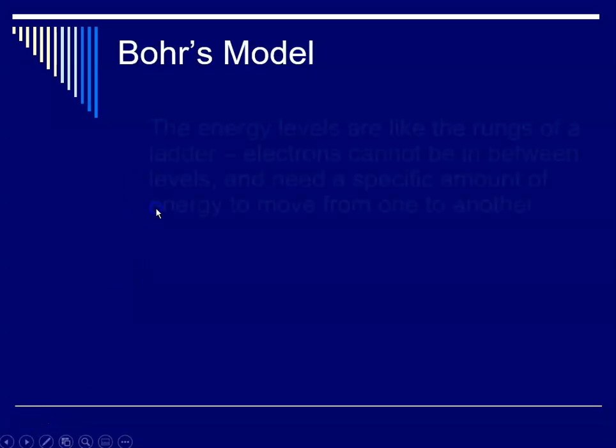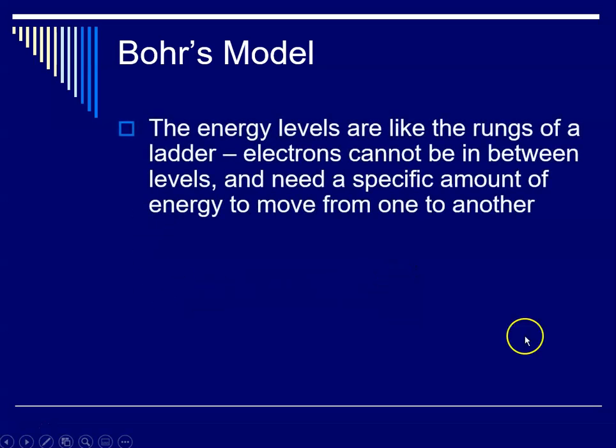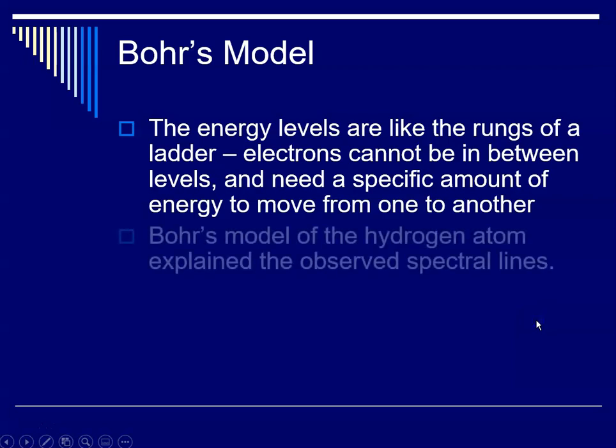So what Bohr proposed is that the energy levels for an atom are like the rungs of a ladder. Electrons cannot be in between the levels, they need to be at these specific energy levels, and if they move from one level to another, they have to have that specific amount of energy.